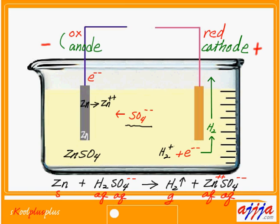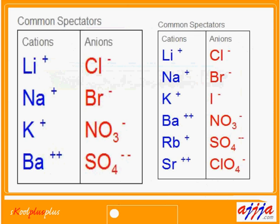The only thing not changed is sulfate. That's why SO₄ we call a spectator — it's a very interesting anion. For spectators, you can remember just the six cation spectators and six anion spectators. Common cation spectators: lithium, sodium, potassium, barium. Common anion spectators: chloride, bromide, nitrate, and sulfate.